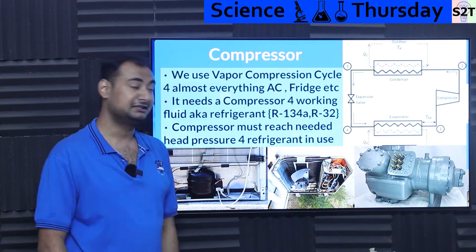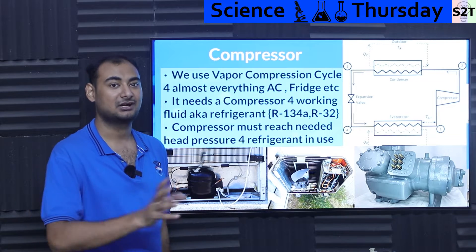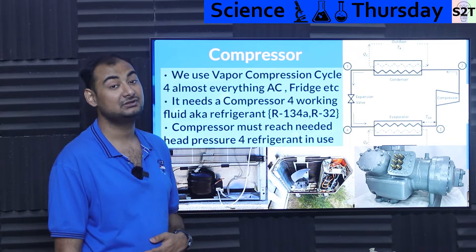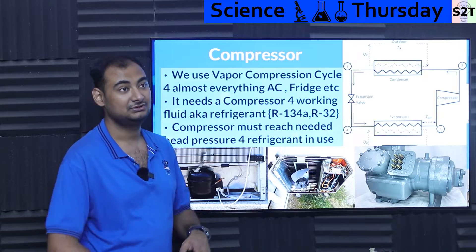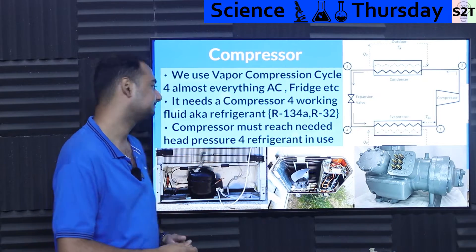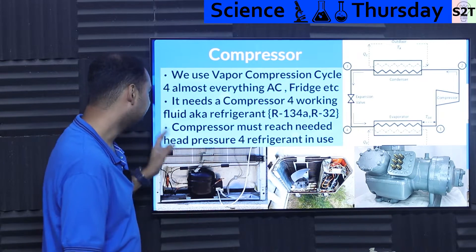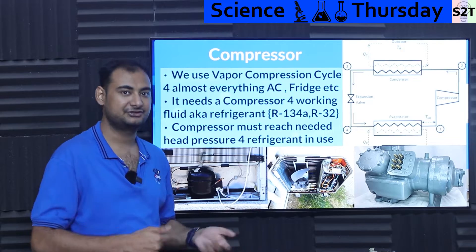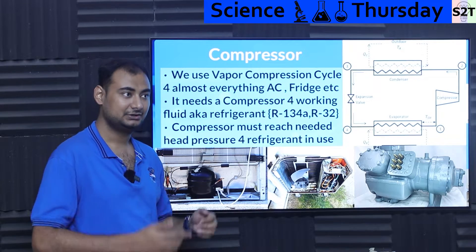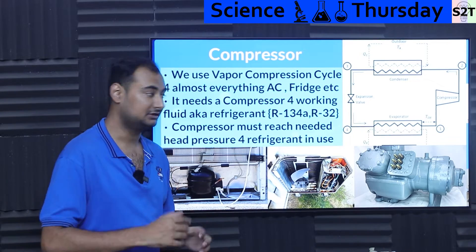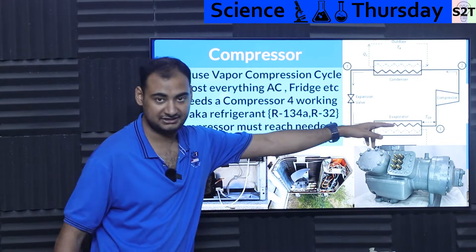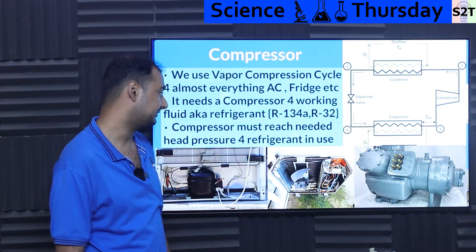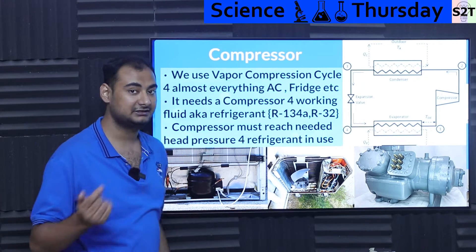The worst compressor requirement is for carbon dioxide — that's so brutal even the piping won't work; it's a completely different beast. Your refrigerant defines what kind of suction pressure and what kind of high pressure is required — not the other way around.